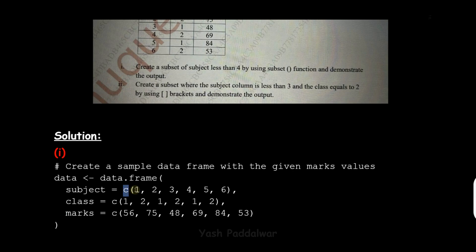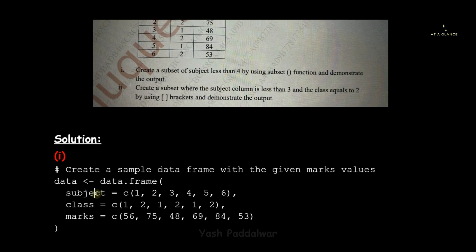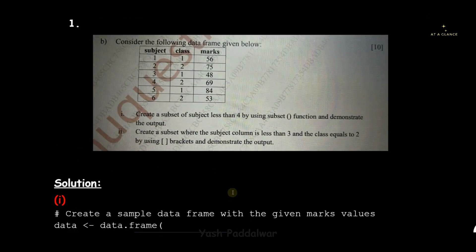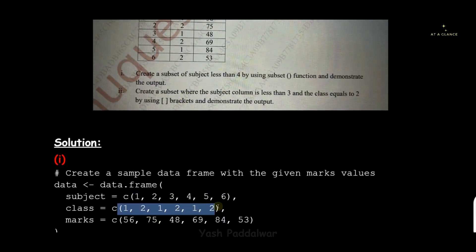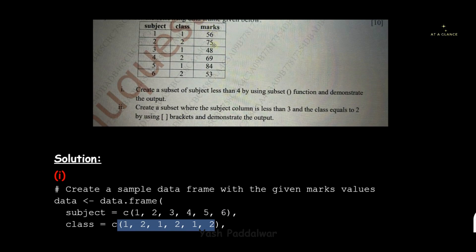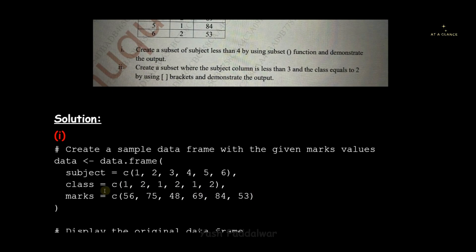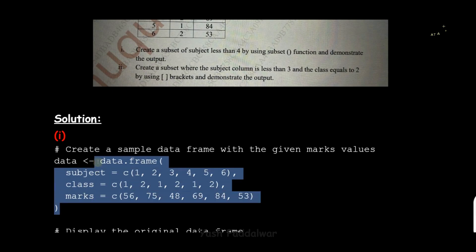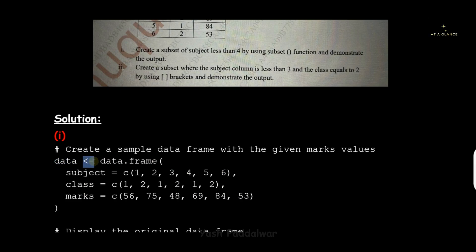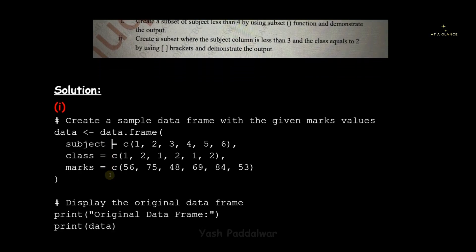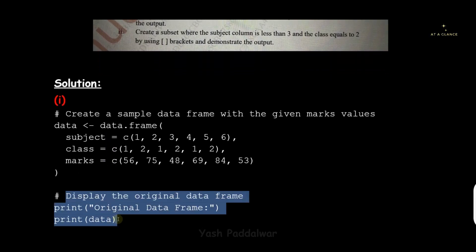Whenever we have to create a column we use the c() function — the combine function — which is used to create vectors. The subject column has the values one, two, three, four, five, six. Similarly, the class column has the values one, two, one, two, one, two, and the marks column has values like 56, 75, and so on. We store all of this in the concerned variables. Note that the assignment operator in R is not equal to — it is a reverse arrow, that is the less-than sign followed by a hyphen.